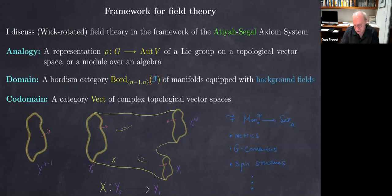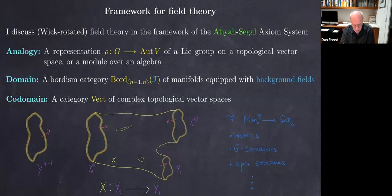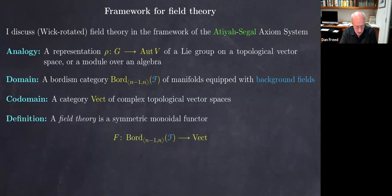A field is some sort of sheaf condition which assigns to every manifold some collection of fields. That collection might be a set — for example, the set of metrics on your manifold — which pull back under local diffeomorphisms. Or it might be a groupoid, like connections, where we remember the gauge transformations. Or it could be a higher groupoid, as you meet with B-fields. The codomain is some kind of category of topological vector spaces, and a field theory is a homomorphism from that domain to that codomain, encoding correlation functions, state spaces, and so on in a Wick-rotated field theory on curved manifolds.